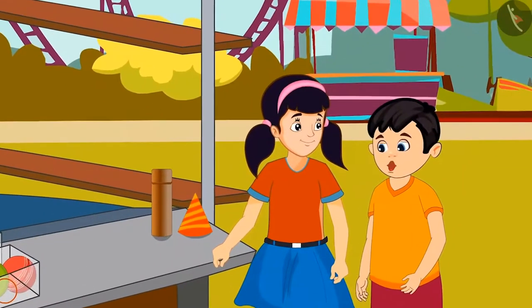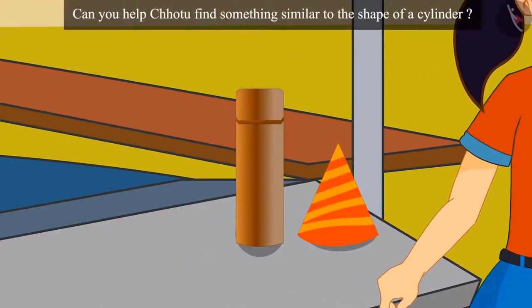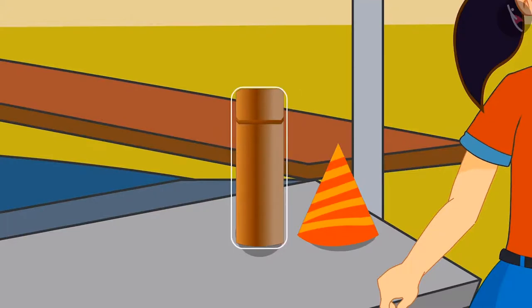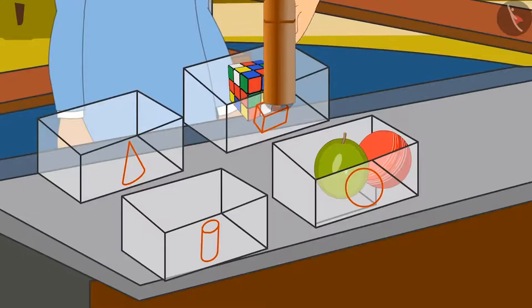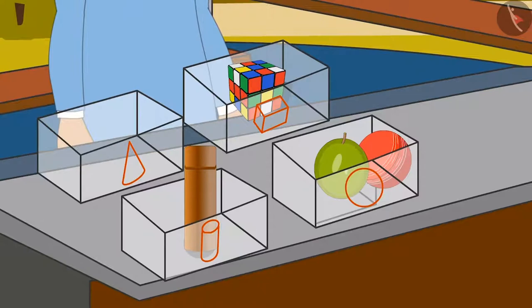And now, we have to find something that looks like a cylinder. And I will find this item, Neha. Children, can you help Chotu find something similar to the shape of a cylinder? You thought right, children. This object looks like a cylinder. Chotu put the cylinder-like object in this box.